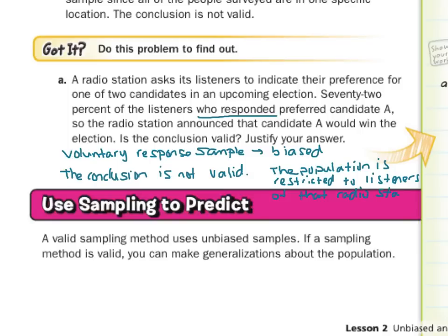There are a lot of things wrong with that survey. Even concluding that 72% of their listeners prefer candidate A would be invalid because it was a voluntary response. It's biased and not valid. You can also point out that the sample is restricted to listeners of that one radio station.